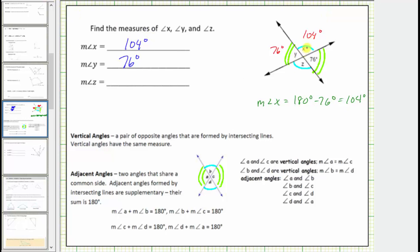Finally, notice angle X and angle Z are vertical angles and therefore have the same measure. The measure of angle Z must be 104 degrees.